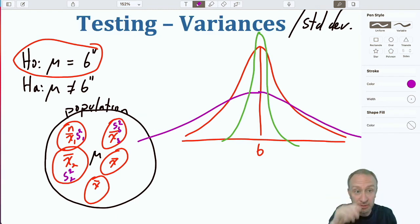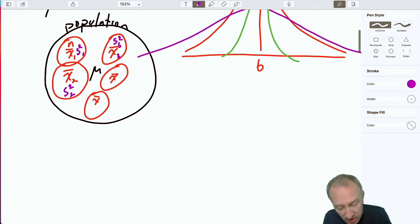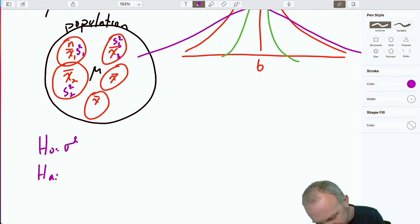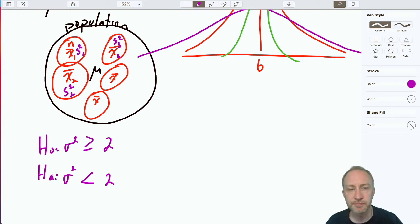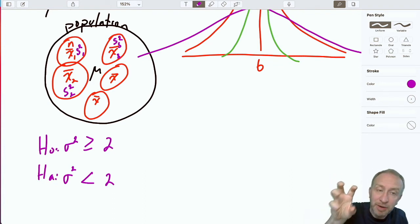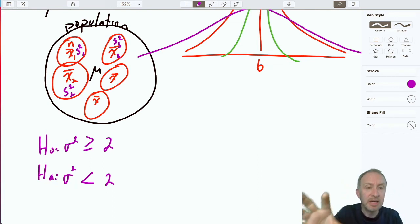So maybe in this context we might set a target and say, yeah we want the mean to be 6, but we also need the variance has to be maybe less than some particular value. Less than 2, just making numbers up. So if that's the level of precision that we need, well then we can use that sample but rather than using the point estimate of the mean, we're going to use the point estimate of the variance.